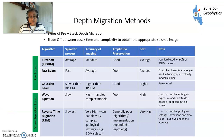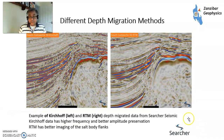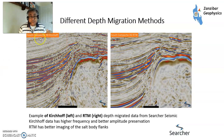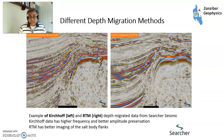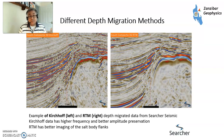Here's an example that Searcher Seismic posted on their social media profiles from data in Mexico — a big salt dome with some bright amplitudes as potential targets, a flat spot, and a phase change visible. With Kirchhoff the image is much higher frequency but also quite a bit noisier. With RTM — more expensive — the frequency is a bit lower and there's a lot less noise, perhaps slightly less definition on the bright events, but the positioning of the salt dome is much better. The key is to use both for the right purposes.